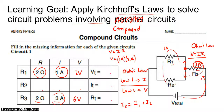Here I have 3 amps, and on the top I have 1 amp. So we can find what the current going through the second one is. The current going through the second must be 3 minus 1, which is 2 amps.